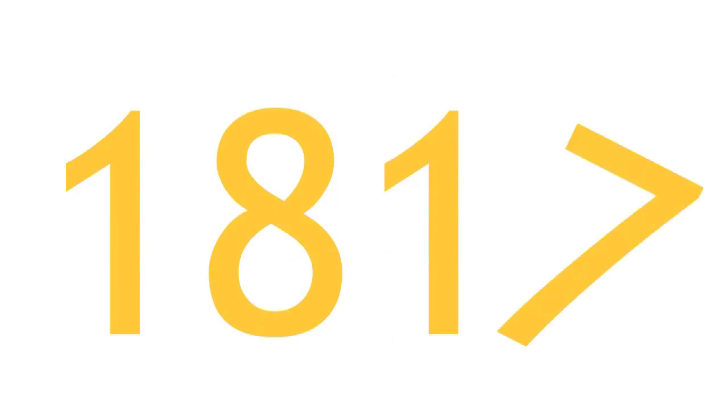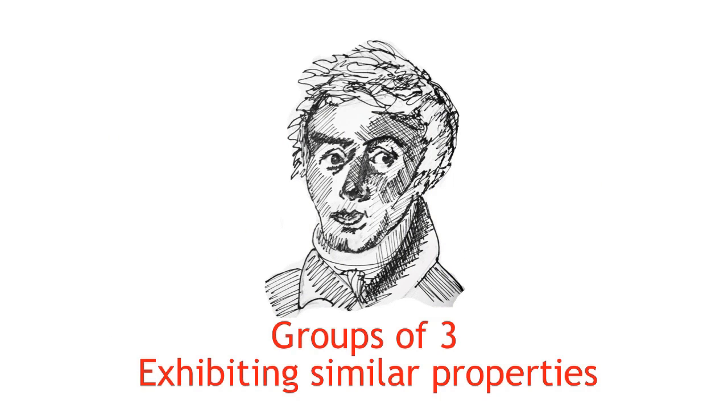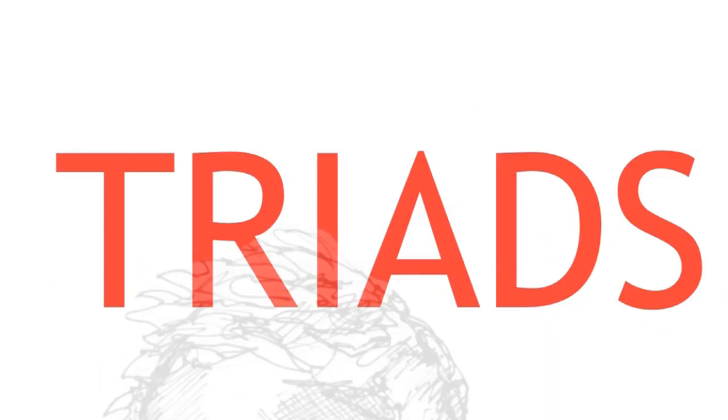In 1817, one of the first patterns amongst the known elements was observed. Johann Wolfgang Dobrinner noticed he could form groups of three with elements exhibiting similar properties. He termed these groups triads.